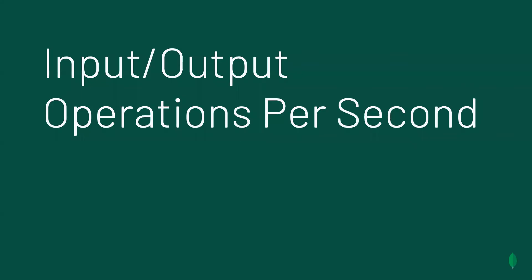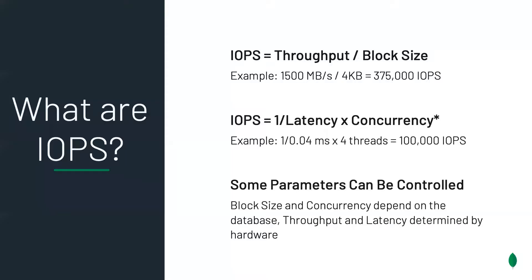So first of all, IOPS stands for input/output operations per second, and that can really be defined in two ways. First, as throughput over the block size — so for example, 1,500 megabytes per second over a 4KB block size yields 375,000 IOPS. Otherwise, as the inverse of latency times the number of concurrent threads accessing the storage medium — so for example, 1 over 0.04 milliseconds times 4 threads yields 100,000 IOPS.